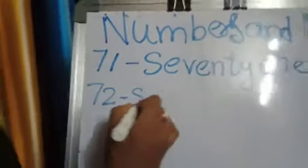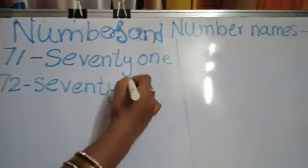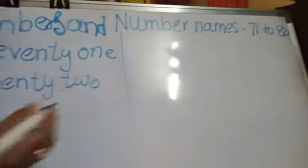Now 72. S-E-V-E-N-T-Y, 70. T-W-O, 2, 72.